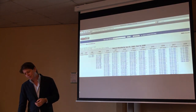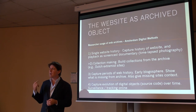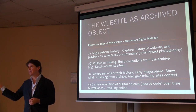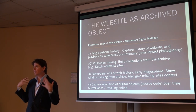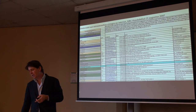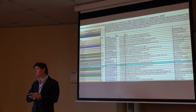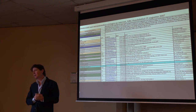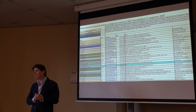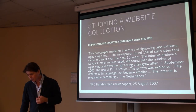Another approach is to make collections of existing archived websites — using web archives as a population and then making collections from them. One example was a collection of extremist Dutch websites, made by a journalist from the NRC Handelsblad, the leading serious newspaper in the Netherlands. Through this collection making, the journalist was able to make claims about the rise of extremism and the hardening of Dutch culture, on the basis of studying archived websites.